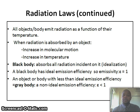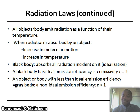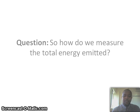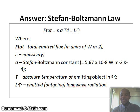Objects emit radiation as a function of temperature. When radiation is absorbed by an object, it increases molecular motion, which increases temperature. A black body is an idealization — no real object exhibits those properties — but a black body absorbs all radiation incident on it and has ideal emission efficiency, so emissivity equals one. An object with emissivity less than one is a gray body, which has non-ideal emission efficiency. The total energy emitted is given by the Stefan-Boltzmann law: total energy emitted is a function of emissivity and the temperature of the emitting object. Therefore, as more energy is absorbed and temperature increases, it increases the rate at which energy is emitted.